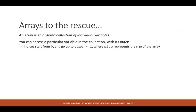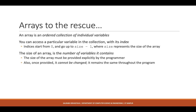The order of variables matters: there is a first variable, a second, a third, and so on. We assign each variable an index. However, instead of starting at one, indices in computer science usually start at zero. So the first index is zero and it runs up to size minus one, where size is the number of variables grouped together.